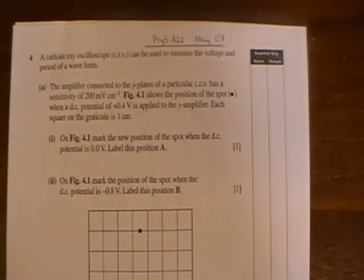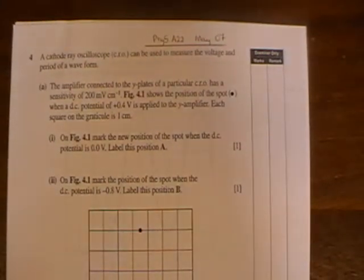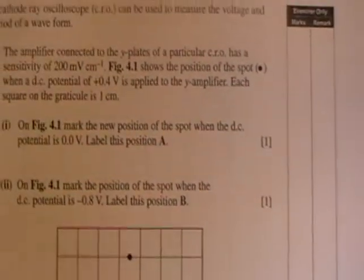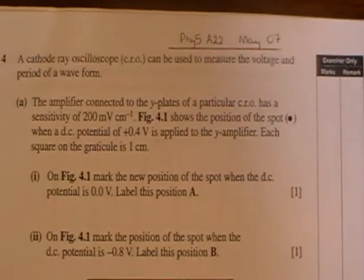This is May 07 Physics 5 A22, question 4, and it starts with a cathode ray oscilloscope or CRO that can be used to measure the voltage and period of a waveform.